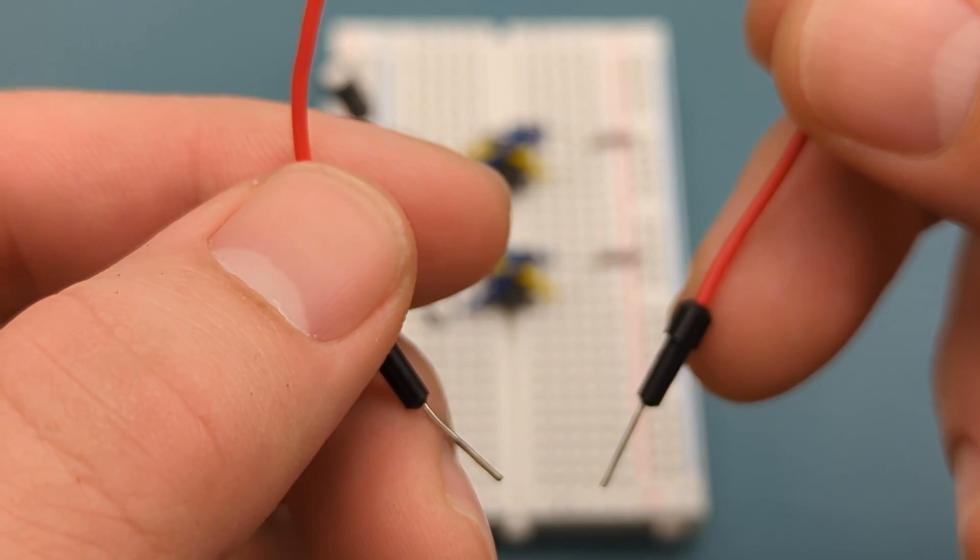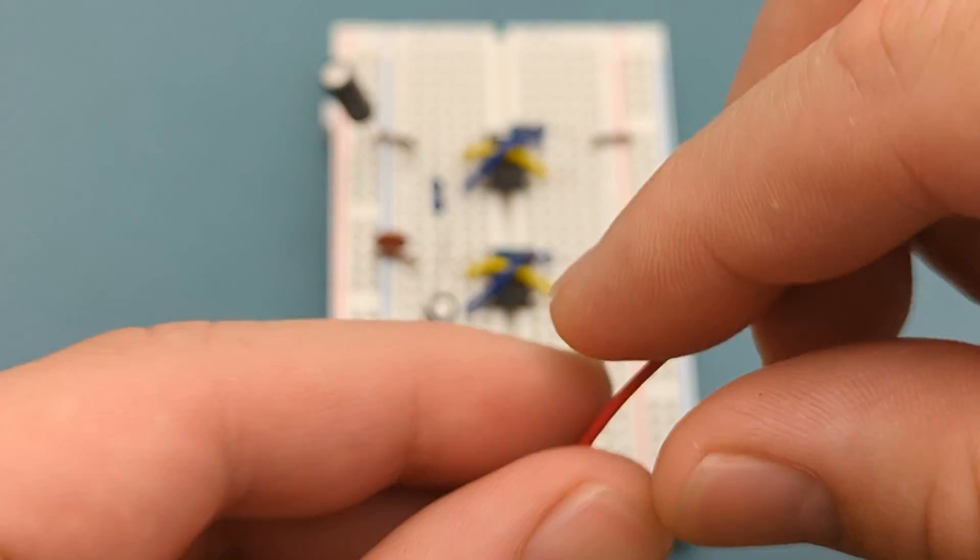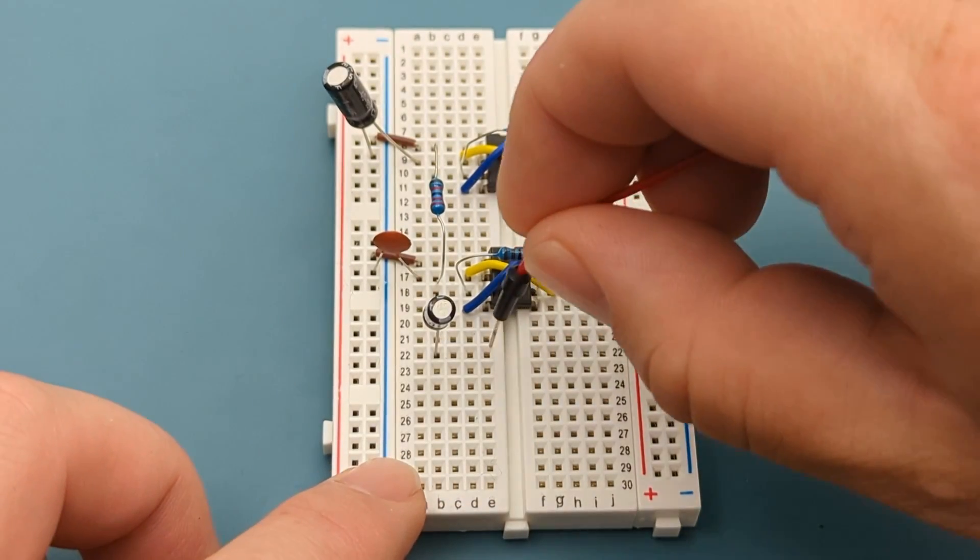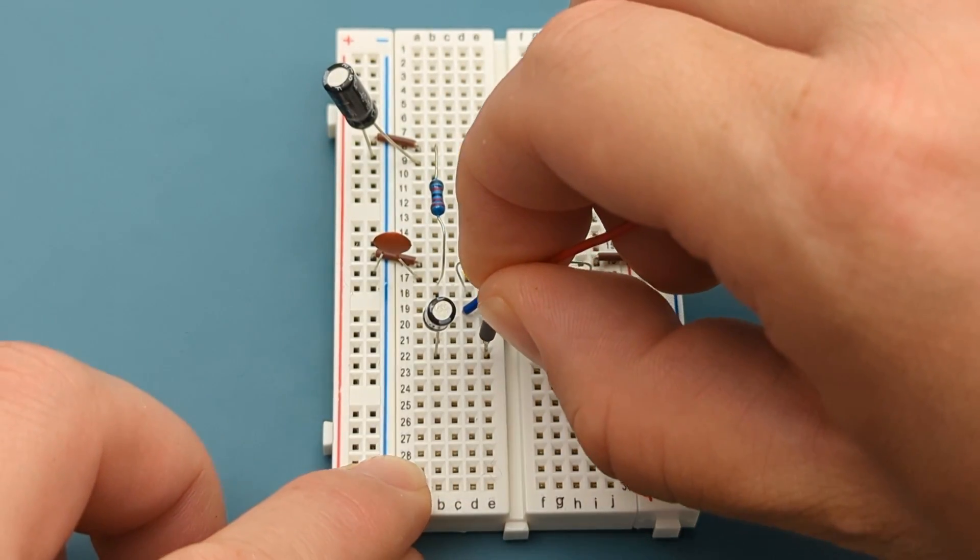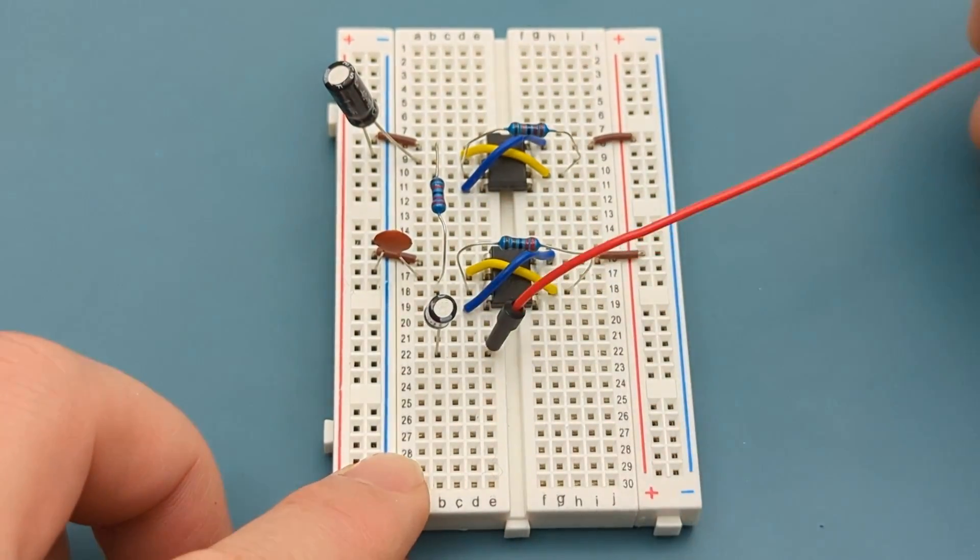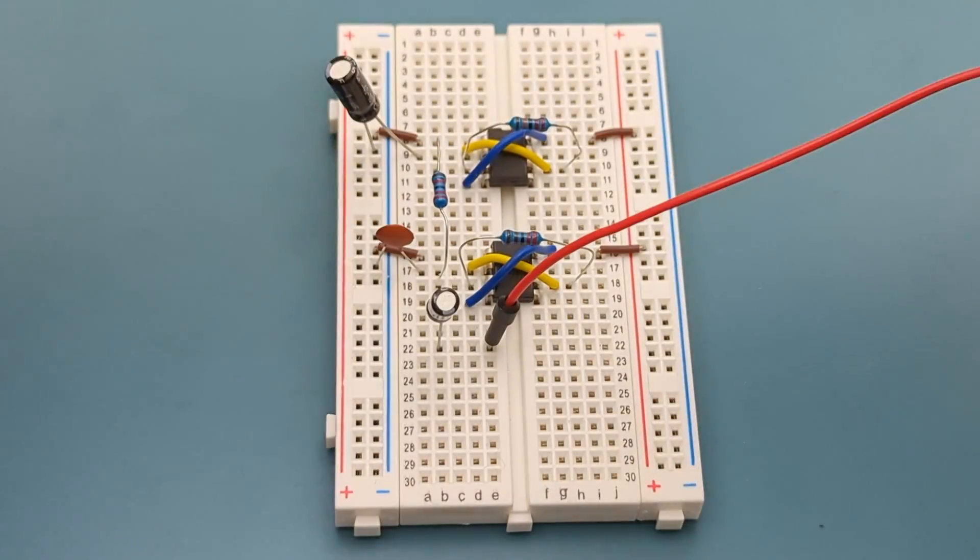Insert a jumper wire in the same row as the 10 microfarad capacitor. Attach the alligator clip to the other end of the jumper wire.